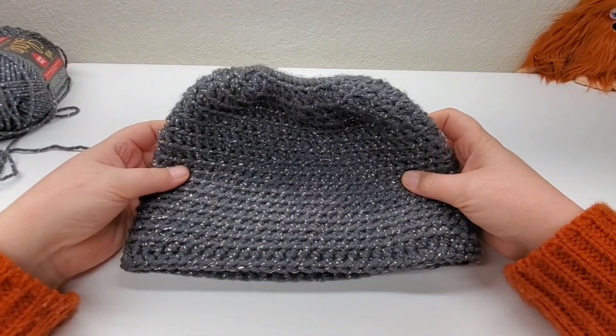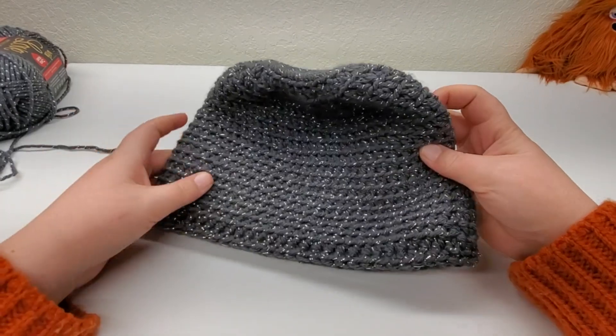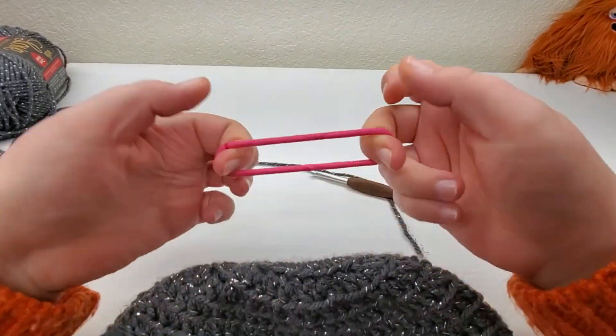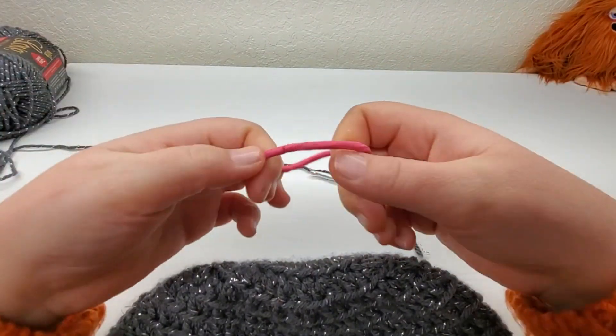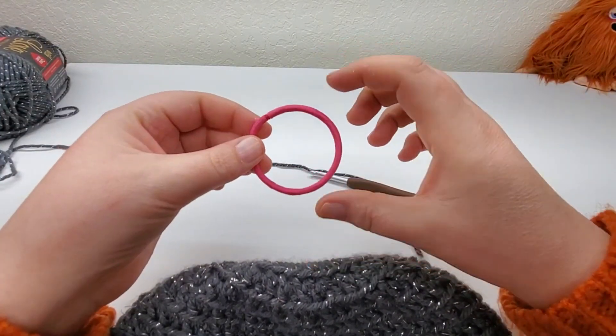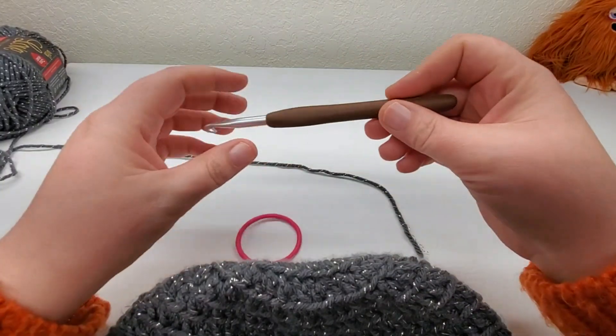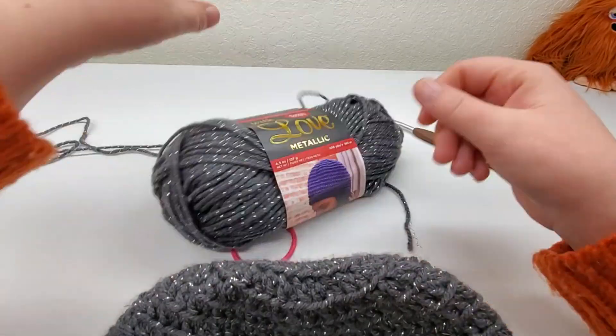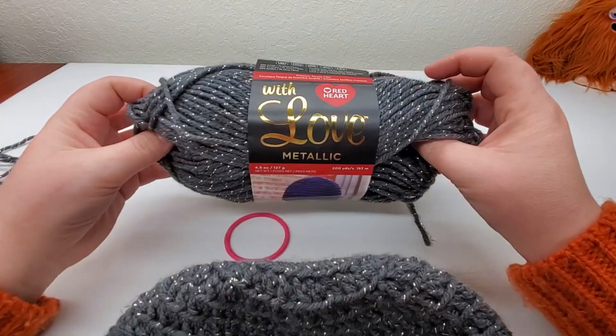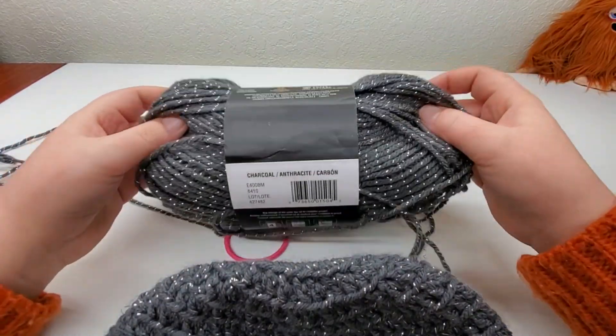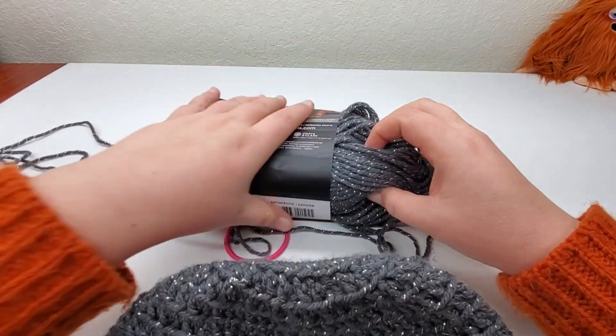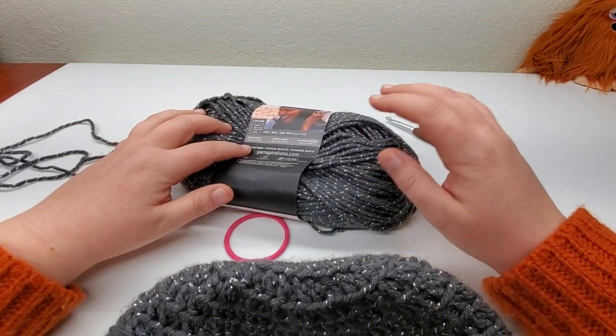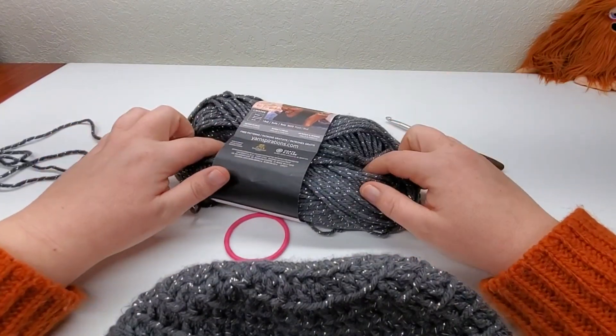Hi guys! So for this messy bun hat tutorial, we're going to need a couple things. You're going to need a hair tie, preferably a good one that's got a good stretch and not worn out and twice as big. We're going to need a 6mm hook, and you're going to need a skein of Red Heart with Love Metallic, and this is the color Charcoal. Now, if you're just making the hat, one skein will do it, but if you're going to make the hat and the scarf, you're going to need two of these.